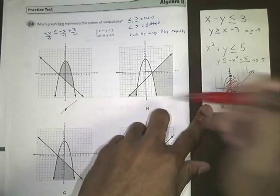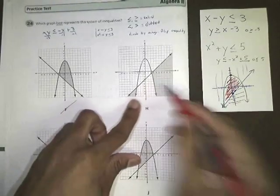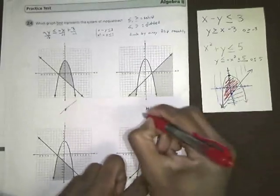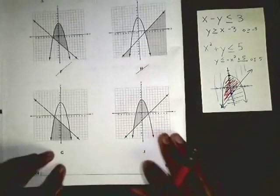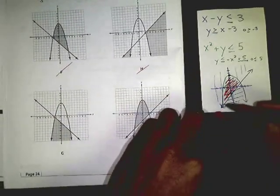So this can't be correct. Choice G, our line again is going down from left to right, and we should have it going up, so choice G can't be correct.